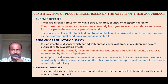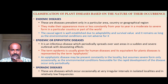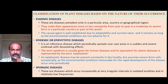Based on the nature of their occurrence, plant diseases can be classified as endemic, epidemic, and sporadic diseases. Endemic diseases are prevalent only in a particular area, country, or geographical location. They appear more or less constantly from year to year in a moderate to severe form. The causal agent is well established due to its adaptability and survival value, and it remains as long as environmental conditions are not adverse.